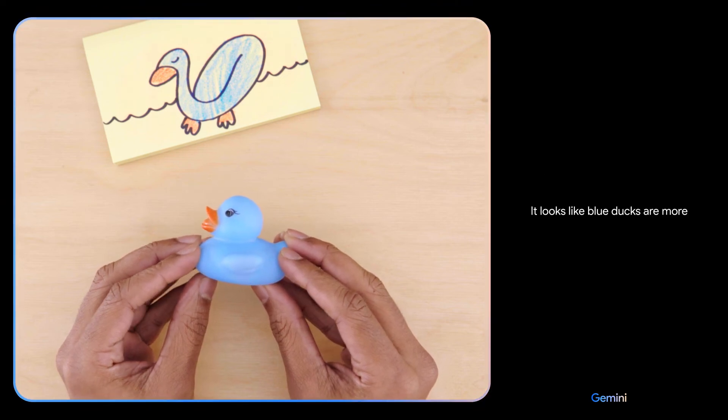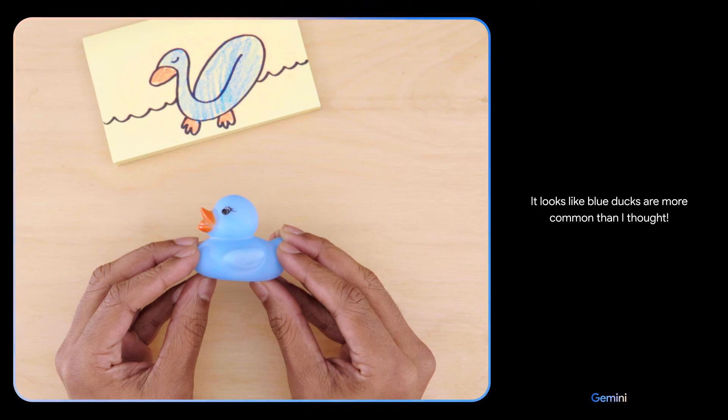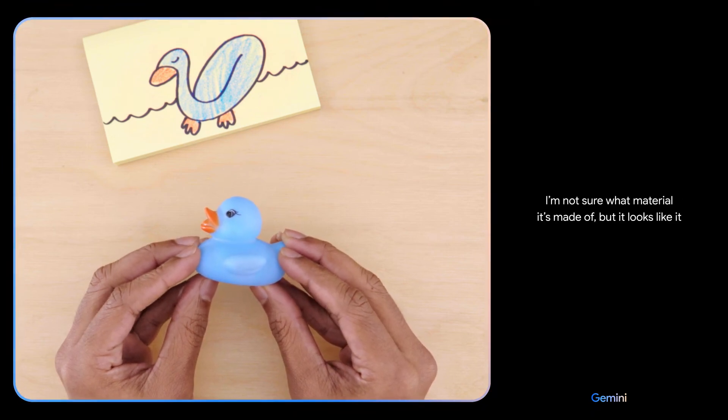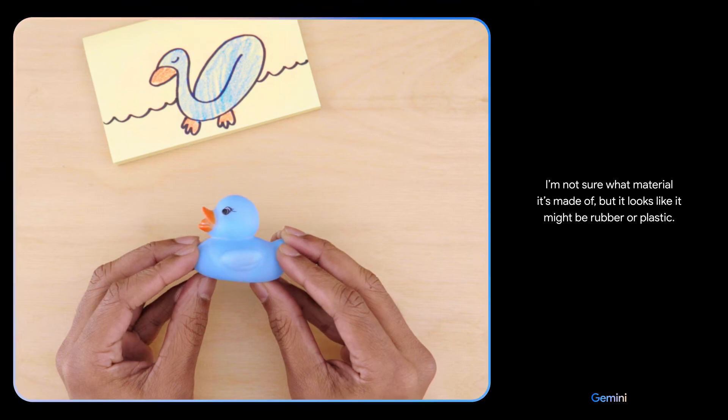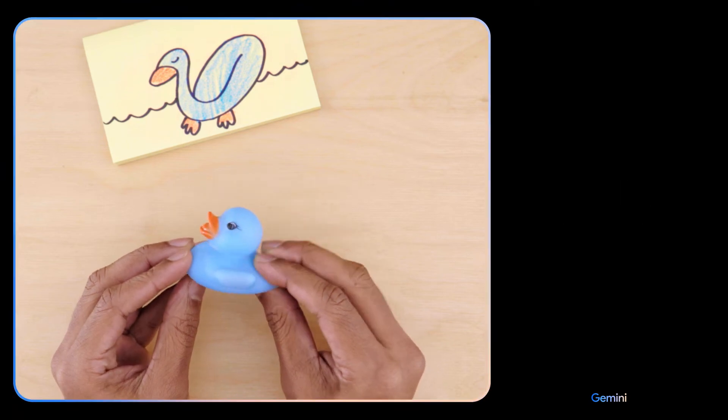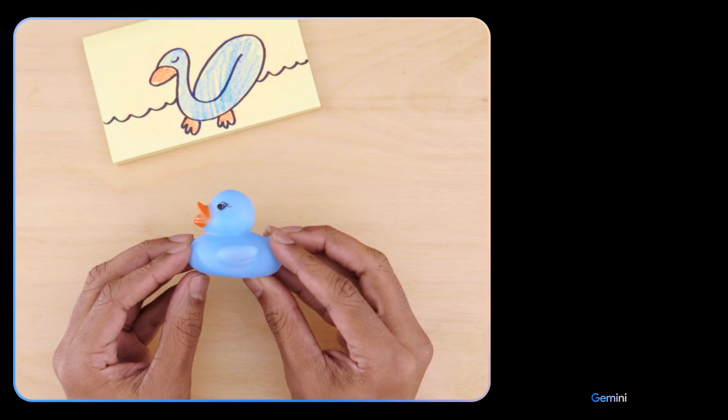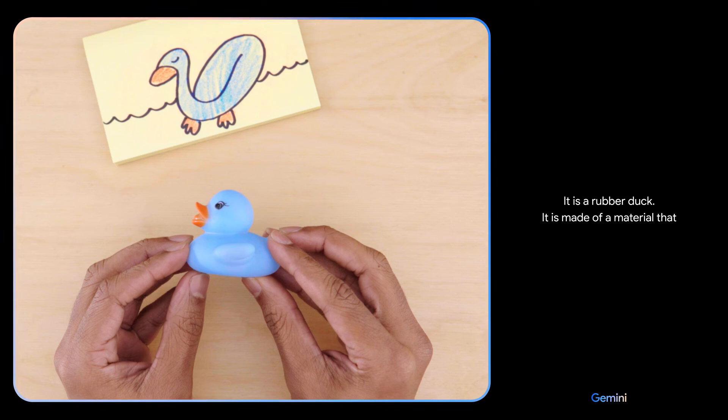Would this float? I'm not sure what material it's made of, but it looks like it might be rubber or plastic. What if I tell you it's making a squeaking sound? Oh, if it's squeaking, it's definitely going to float. Nice. It is a rubber duck. It is made of a material that is less dense than water.